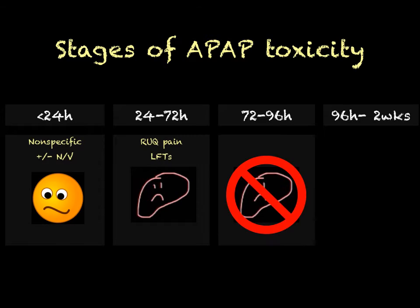It really is at about 72 hours or greater that they start exhibiting some signs of liver failure, in which you may see evidence of coagulopathy, jaundice, and confusion resulting from encephalopathy. If someone is presenting at this stage, you really should be considering having them at a center where a liver transplant team might be able to evaluate them.